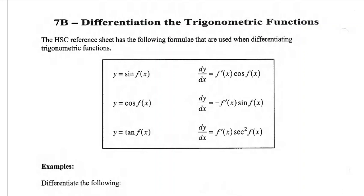About a third of the way down you'll see: y equals sine f(x). When you differentiate it, the derivative of your function comes out front, sine changes to cos of your function. For cos: the derivative of the function comes out front with a minus sign, and cos changes to sine of f(x). For tan: the derivative of the function comes out front, and tan changes to sec squared. Whenever differentiating trig, keep this formula sheet nearby so you always get the minus signs right.